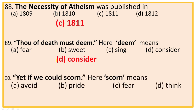Question 90: 'Yet if we could scorn.' Here 'scorn' means — options: avoid, pride, fear, think. This is from stanza 19: 'Yet if we could scorn, hate and pride and fear; if we were things born not to shed a tear.' So 'scorn' means avoid. The right option is A, avoid. All 30 questions completed.